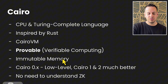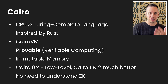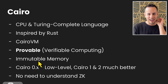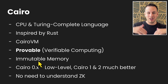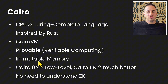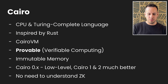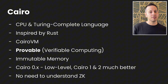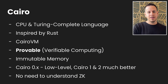Because Cairo is provable and uses Starks and zero-knowledge proofs, we have some constraints. One of the biggest constraints is that the memory is immutable, which means once you run a program, you cannot change the memory during execution. Imagine you define a variable — you cannot change its value through the function. This creates problems; for example, you cannot do for-loops because you cannot increment a counter variable.